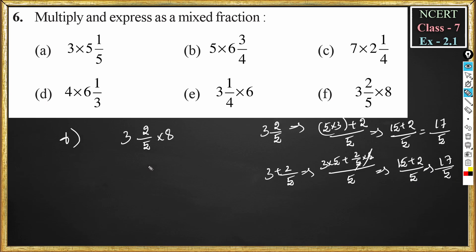So 3²/₅ into 8 becomes 17/5 into 8. 17 multiplied by 8: 8 sevens are 56, 8 ones are 8, so 56 + 80 gives 136, divided by 5.